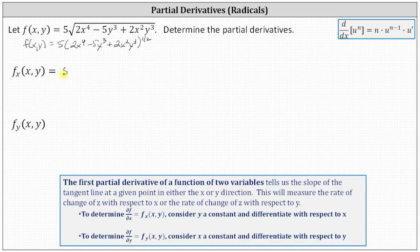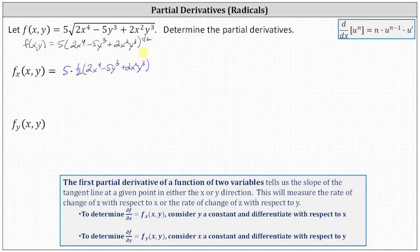To begin, we have five, and then we multiply by the exponent of 1/2, and then we have the base of 2x to the fourth minus 5y cubed plus 2x squared y cubed to the power of 1/2 minus 1, which is negative 1/2, and then times the derivative of the base, which in this case is the partial derivative of the base with respect to x.